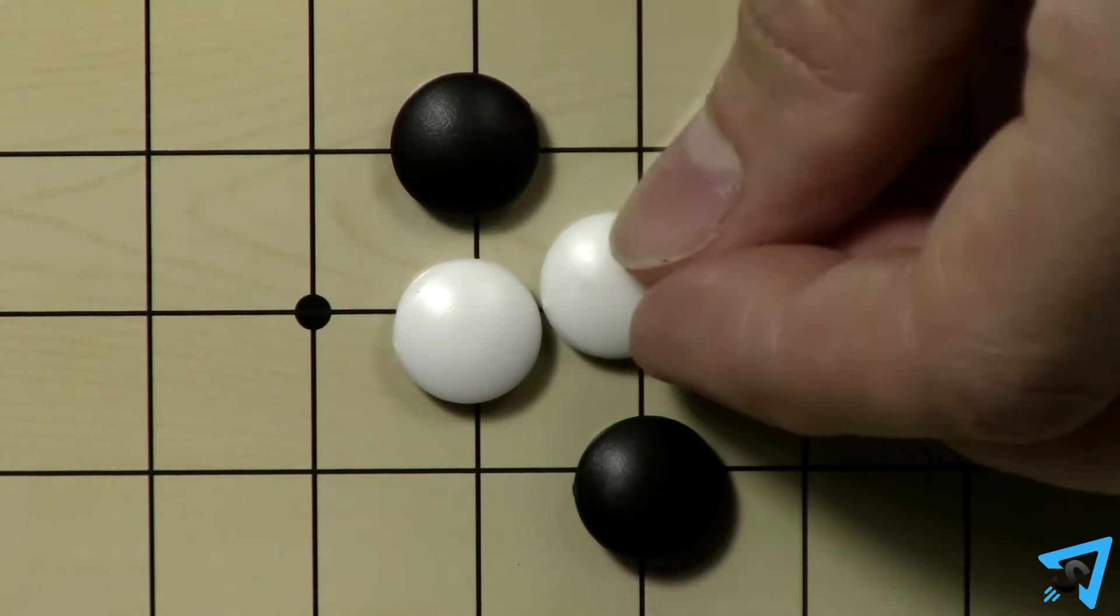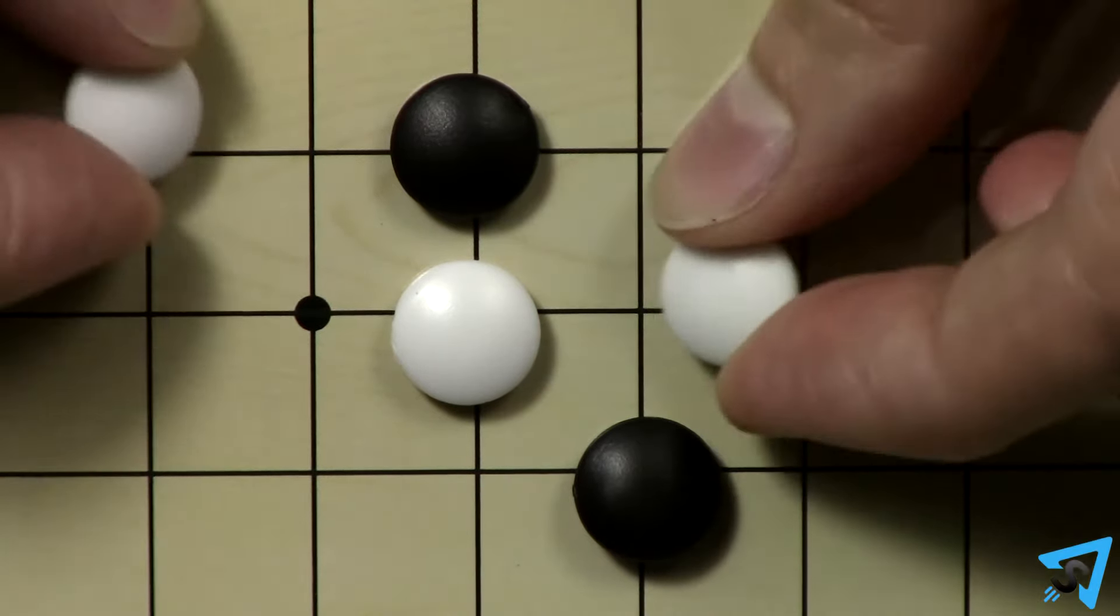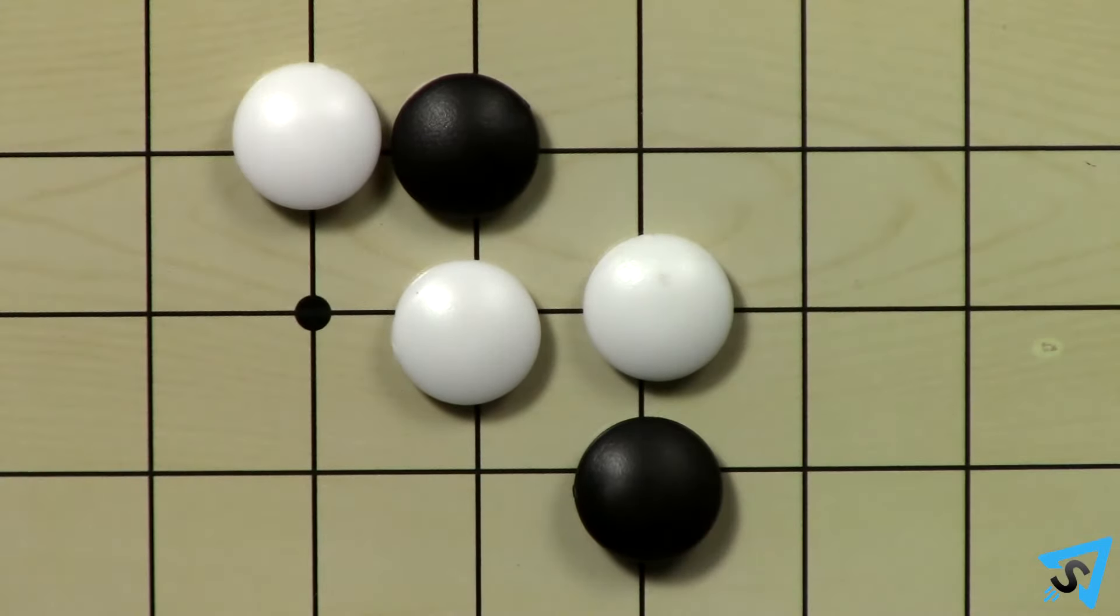The second player then selects to either play black, play white and place one more white stone, or place two more stones of any color and let the first player choose the color that they want to be.